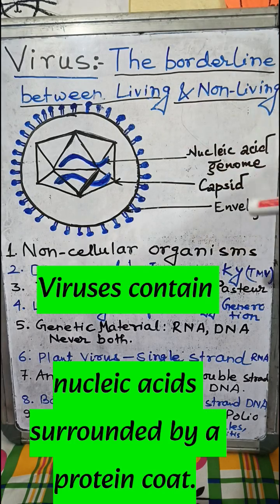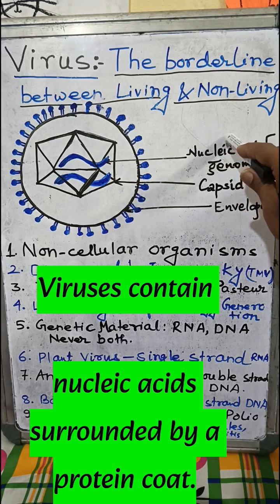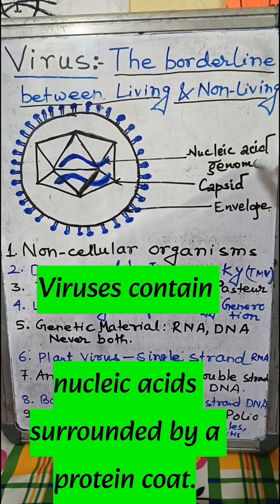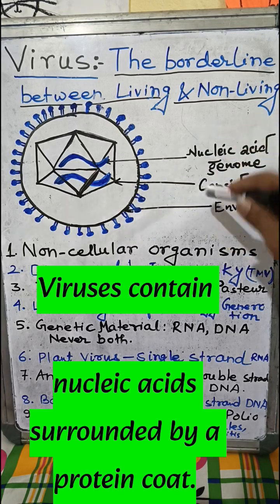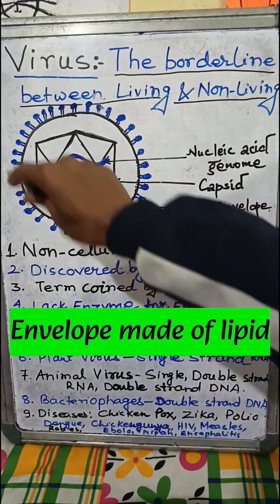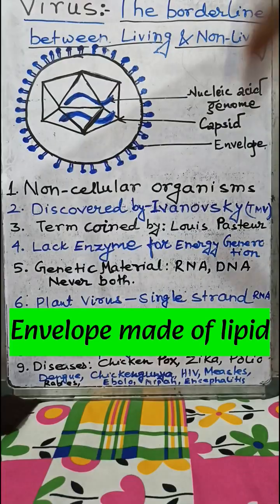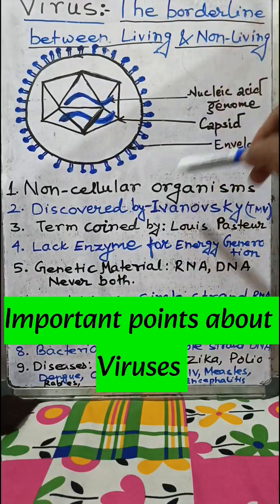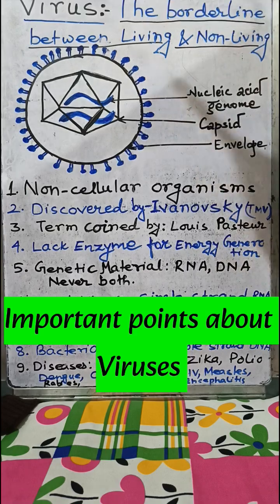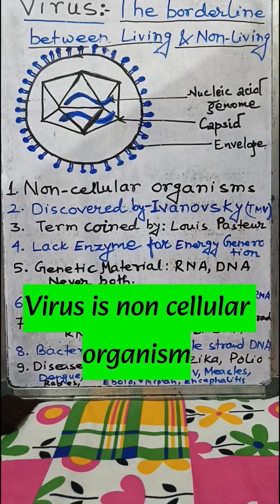Let us now try to understand the structure of a virus. A virus is basically composed of only two things: the first is the nucleic acid and the second is the protein. This nucleic acid genome is enclosed by a capsid, which is basically a protein. In some viruses there will also be an envelope made of lipid.